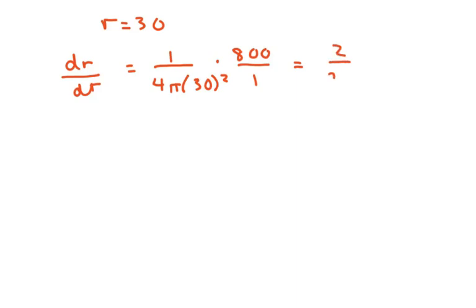So when r is 30, we have dr/dt equals 1 over 4π times 30² and the numerator is going to be 800. Or I can just write it like that. And that's going to be 2 over 9π, after you reduce it, centimeters per minute.